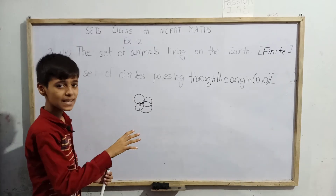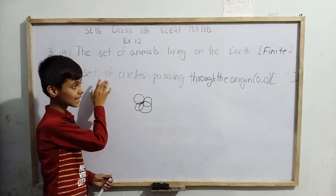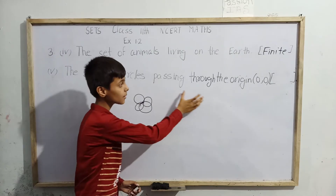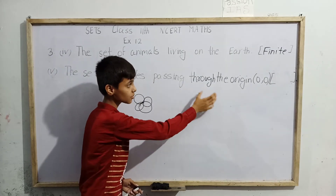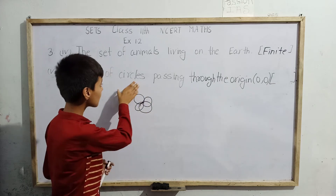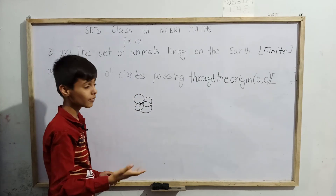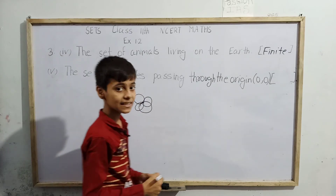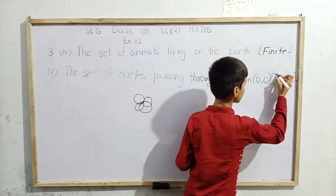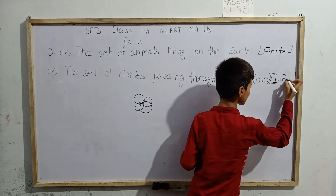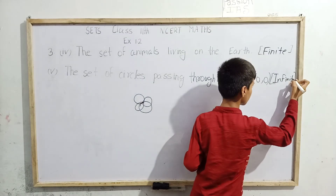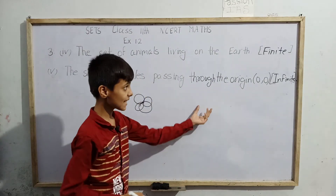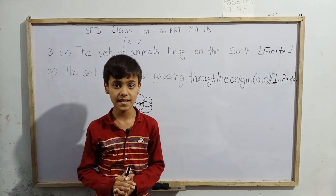As many circles as we want means infinity. In the set where the elements are circles passing through the origin (0, 0), the number of elements is infinite. Therefore, this set is an infinite set. So the answer for part five of question three is that it is an infinite set. That was today's topic — thank you.